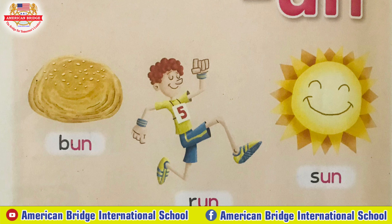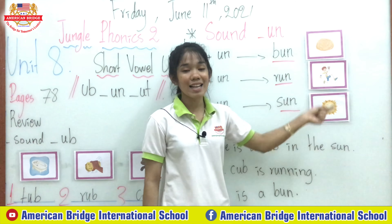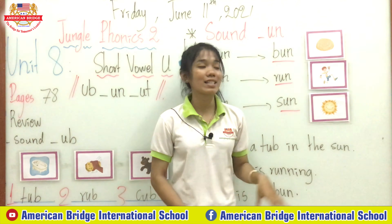Now look at the whiteboard. You will study the new sound 'an'. What is the sound of letter B? B, an — yes, ban! What is the sound of letter R? R, an — yes, run! And the sound of letter S? S, an — yes, sun! So we have ban, run, and sun. Run means the action where you can move faster than walking. And sun — you know sun, right everyone? Great.